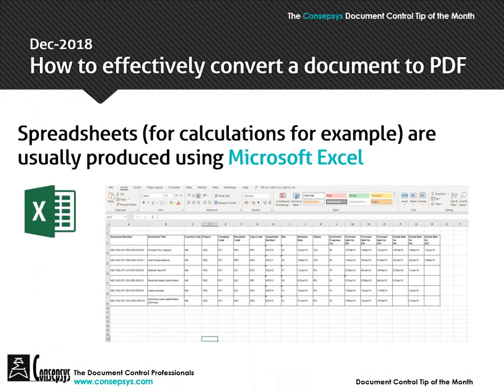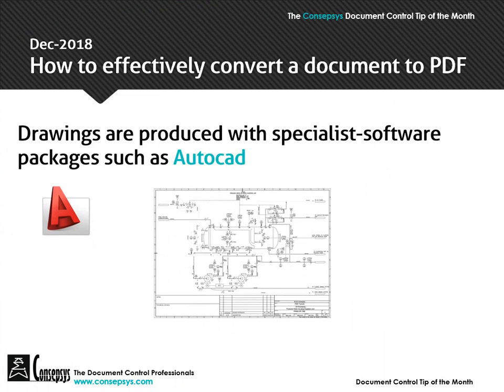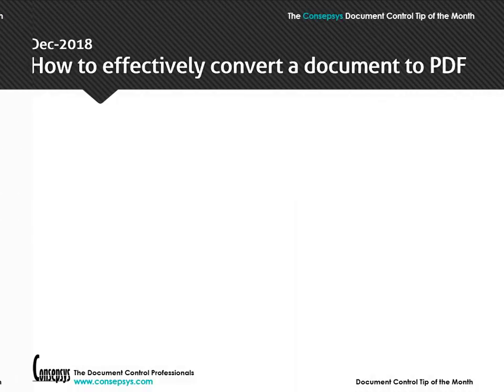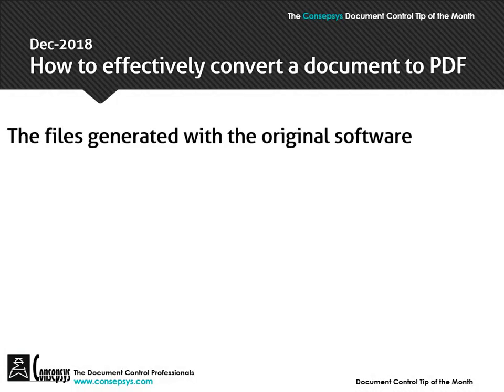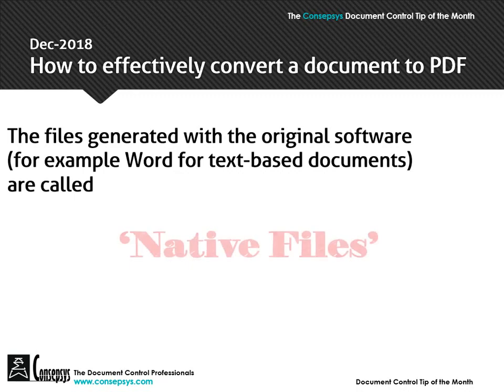And for spreadsheets, for calculations for example, they are usually produced using Microsoft Excel. Drawings are produced with specialist software packages such as AutoCAD. The files generated with the original software — for example Word for text-based documents — are called native files.